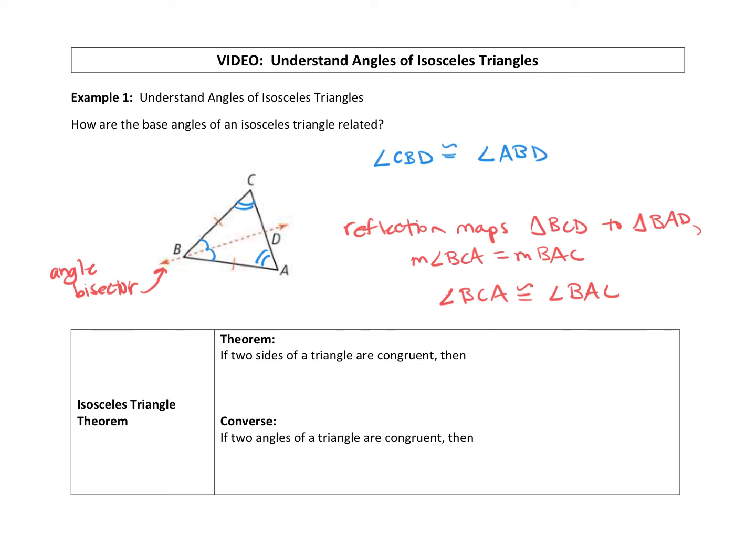So that's going to lead us to our isosceles triangle theorem. If two sides of a triangle are congruent, then the angles opposite those sides are congruent. So what that means is if you have a triangle and we're told that two sides are congruent, it's an isosceles triangle, then the angles opposite those sides are congruent.